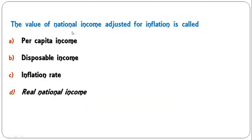Gross Domestic Capital Formation (GDCF) or gross investment equals: gross fixed capital formation plus inventory investment; or gross business fixed investment plus gross residential construction investment plus gross public investment plus inventory investment; or both A and B; or government final consumption expenditure? The correct answer is both A and B — option C. GDCF equals gross fixed capital formation plus inventory investment, which is the same as the expanded form in option B.